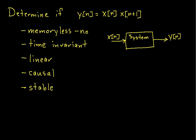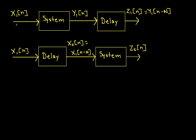Let's see if the system is time invariant. In order to be time invariant, the system has to satisfy the following: I take an input signal, run it through the system, and delay it. Or, I take that same input signal, delay it, run the delayed version through the system, and in both cases I should get the same thing.